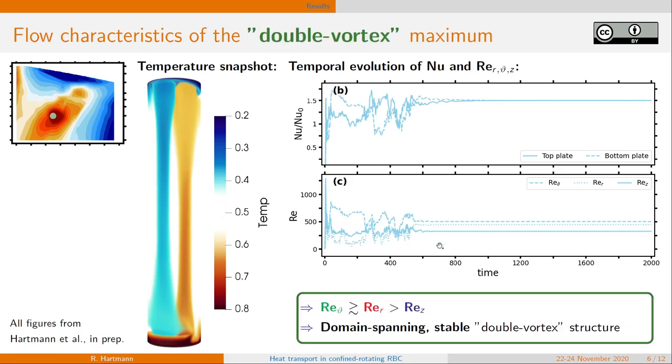This is different for the double vortex maximum. First, we see in the temperature snapshot, not two plumes, but the name giving two vortices, one filled with hot fluid, one filled with cold fluid. And it appears to be very stable in time after this double vortex state is reached.